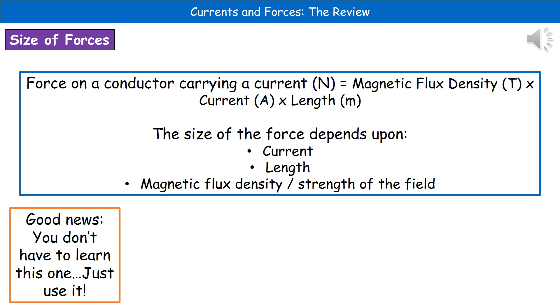The last thing we need to consider is the size of the force. There are three things that determine the size of the force that acts on our conductor carrying a current. The first is the actual size of the current itself. The second is the length of the piece of wire. And the third is the strength of the field, or its magnetic flux density.